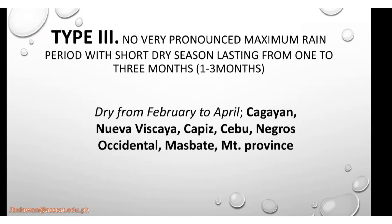For Type 3, they have no very pronounced maximum rain period, with a short dry season lasting from one to three months, dry from February to April. Places include Cagayan, Nueva Vizcaya, Capiz, Cebu, Negros Occidental, Masbate, and Mountain Province.